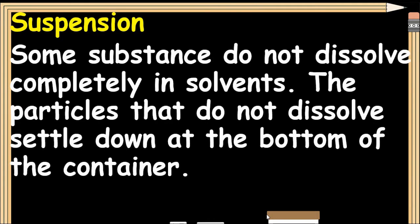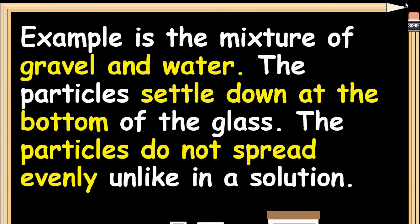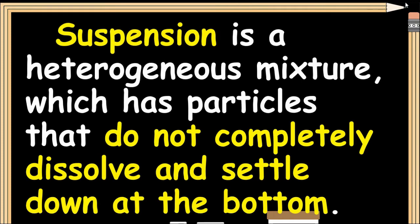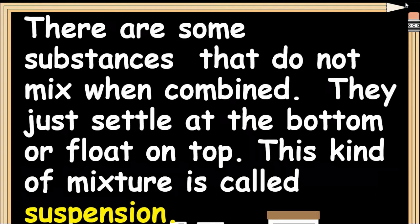Some substances do not dissolve completely in solvents. The particles that do not dissolve settle down at the bottom of the container. For example, in a mixture of gravel and water, the particles settle down at the bottom of the glass and do not spread evenly, unlike in a solution. Suspension is a heterogeneous mixture which has particles that do not completely dissolve and settle at the bottom. There are some substances that do not mix when combined — they just settle at the bottom or float on top. This kind of mixture is called suspension.